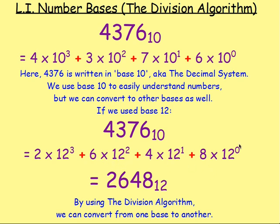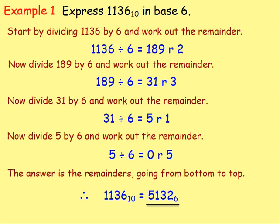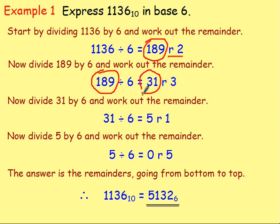You use the division algorithm! To do that, if you have a number in base 10 and you want to write it in base 6, you take that number and divide by 6. Then you take that answer and divide that by 6 as well. When you divide it, you will end up with a remainder — it's the remainders that are important. So if you divide that by 6 again, you will get an answer with a remainder. Divide the 31 by 6, getting an answer with a remainder. Divide that answer by 6 again — the remainders are what you want to look at.